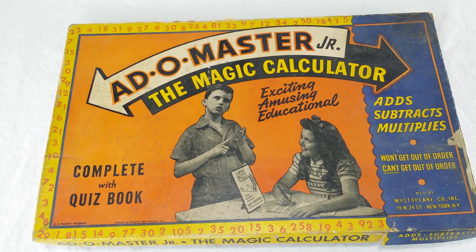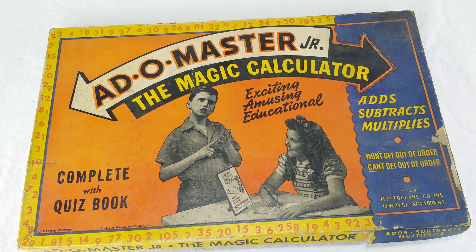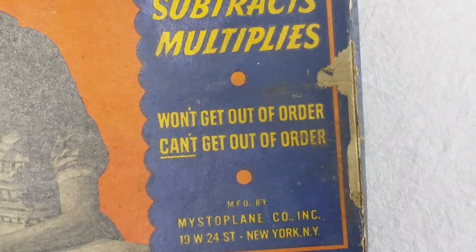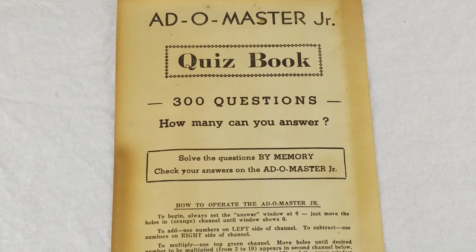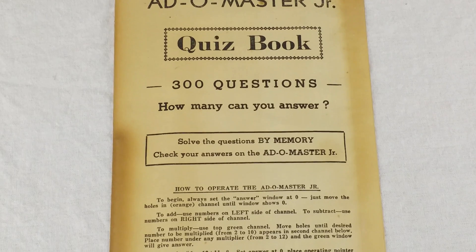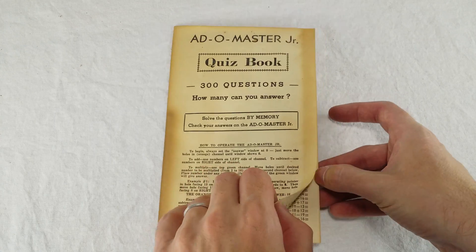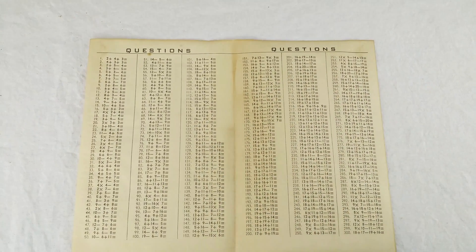It's exciting, amusing, and educational. Here it says 'won't get out of order,' 'can't get out of order.' The quiz book has some basic instructions about how to use it and two examples here. And then they give you some for you to try. Oh, my gracious.